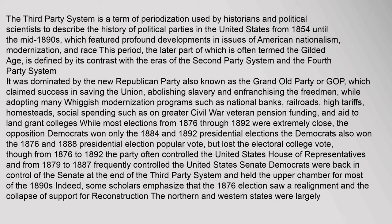The third-party system is a term of periodization used by historians and political scientists to describe the history of political parties in the United States from 1854 until the mid-1890s, which featured profound developments in issues of American nationalism, modernization, and race. This period, the later part of which is often termed the Gilded Age, is defined by its contrast with the eras of the second-party system and the fourth-party system.